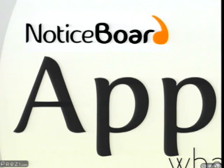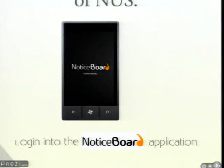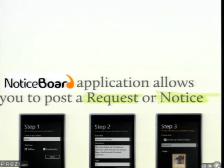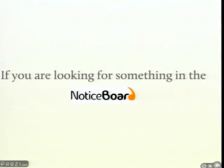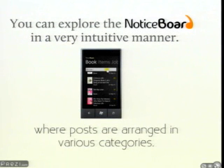I'll walk you through the basis of our application and how one can reach out to the whole of NUS. First, we log in to the Notice Board application. Next, we can post a request or notice. A request is something like: I am setting up a blog shop and I would like someone to write a website for me. A notice is something like: I'm a freelance programmer and I'm willing to do anything for a small price — does anyone want to hire me? All this can be done in three simple steps. When you navigate through the Notice Board, it is very intuitive because all posts are categorized. The categories are books, items, jobs, CCAs, and IVLE events. And like any good application, we have a simple search feature.